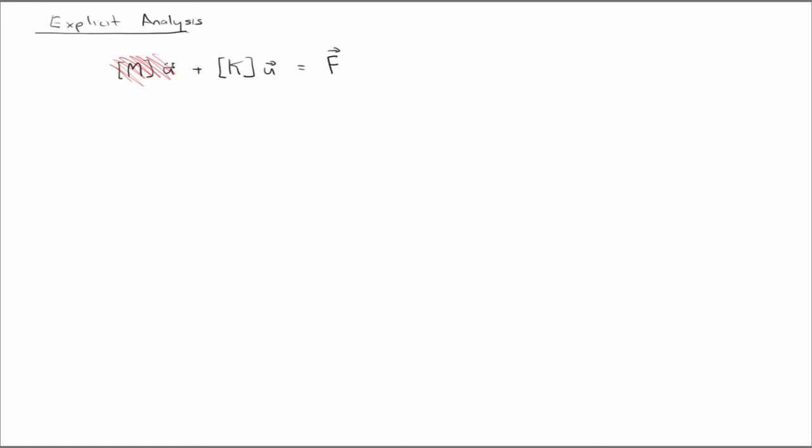And of course, this has already been written in matrix form where I've assumed that the spatial discretization has already been carried out. So M is that, K is that. It's obvious I'm talking about elasticity here.